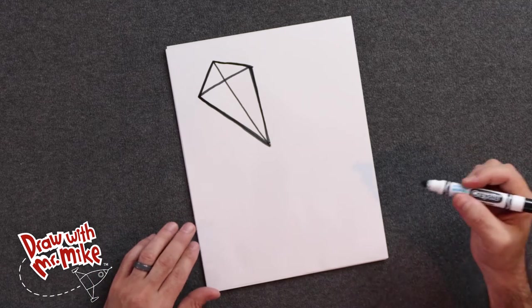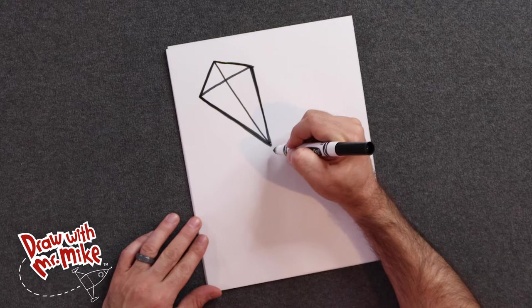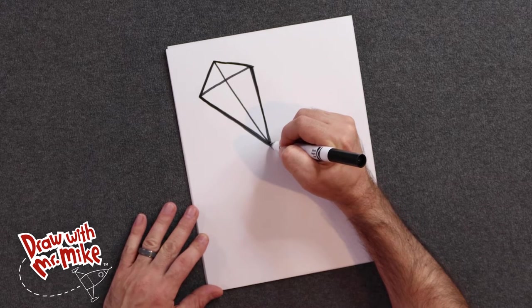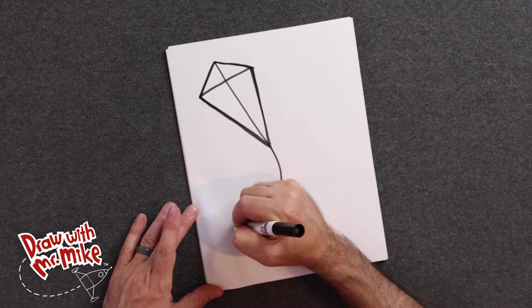Next, we're going to add in an arc. And I want that arc to start here. This is going to be the string for the tail of the kite. So let's start here and we're going to make a nice big flowing arc that goes this way and stop.